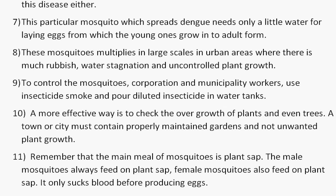To control the mosquitoes, corporation and municipality workers use insecticide smoke and pour diluted insecticide in water tanks. A more effective way is to check the overgrowth of plants and even trees.